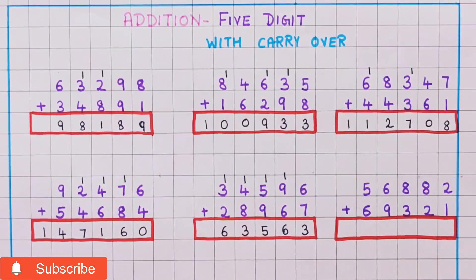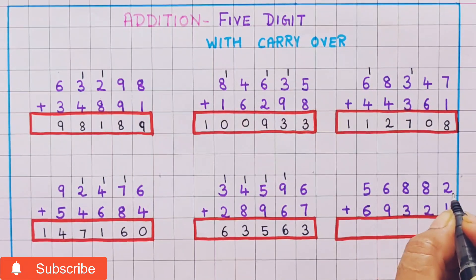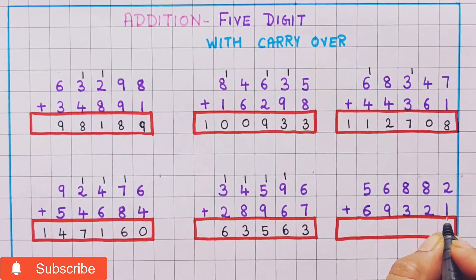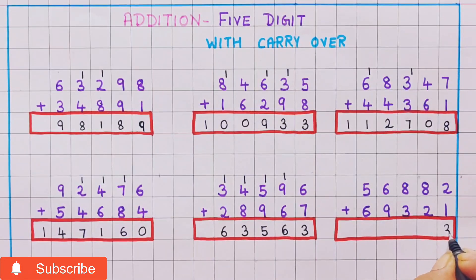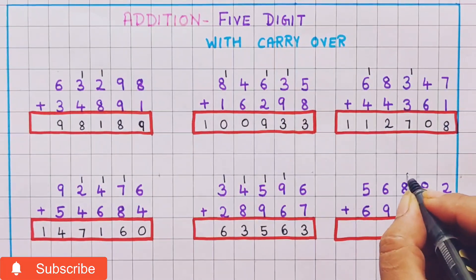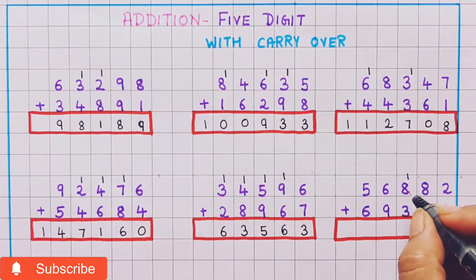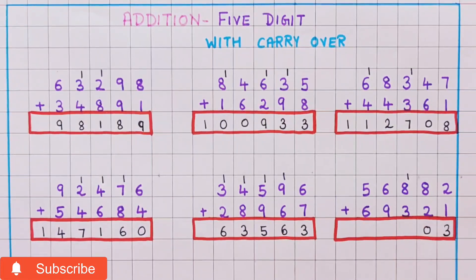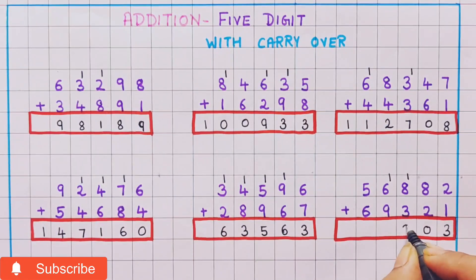Now let's do the last problem: 56,882 plus 69,321. Now 2 plus 1 is 3. 8 plus 2 is 10, so 1 and 0. Now 8 plus 1 is 9, and 9 plus 3 is 12, so I will write 1 and 2.